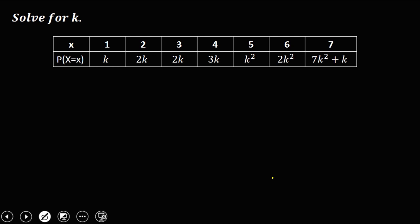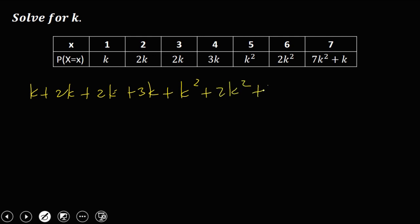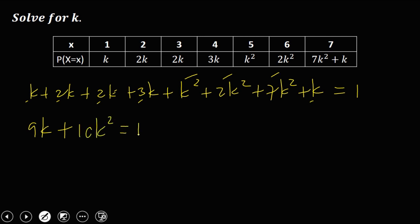Then for this given, solve for K — add all the probabilities and equate to 1. So K plus 2K plus 2K plus 3K plus K squared plus 2K squared plus 7K squared plus K equals 1. Combining like terms: for K, 1 plus 2 plus 2 plus 3 plus 1 equals 9K. For K squared, 1 plus 2 plus 7 equals 10K squared. So 10K squared plus 9K equals 1.